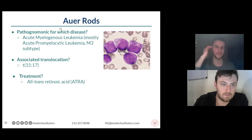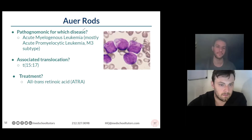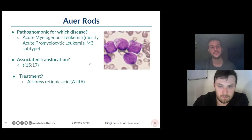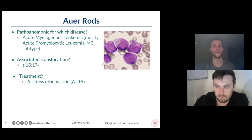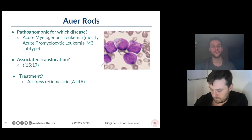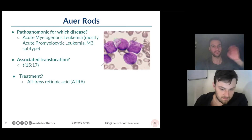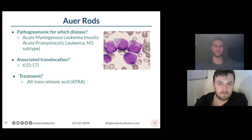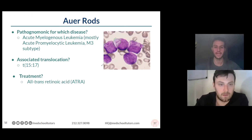There used to be a different classification that went by these letters, and this is also called M3. It's due to a translocation of chromosomes 15 and 17 that involves the retinoic acid receptor. The result is that you can't fully mature these cells as a result of the change in the retinoic acid receptor. So the treatment is to give all-trans retinoic acid — kind of flood the system with vitamin A — so that you override that translocation, help these cells differentiate fully, and ultimately cure the APML.